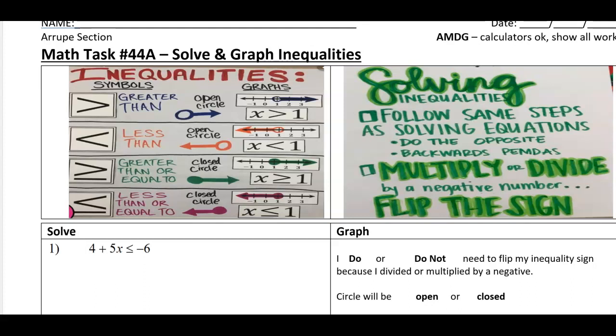Just remember from yesterday that the greater than or less than signs, those have open circles when you graph because they do not include the solution. And then the greater than or equal to or the less than or equal to signs have closed circles because they do include the solution. You've got a line under it, you're going to have a closed circle that's going to include.